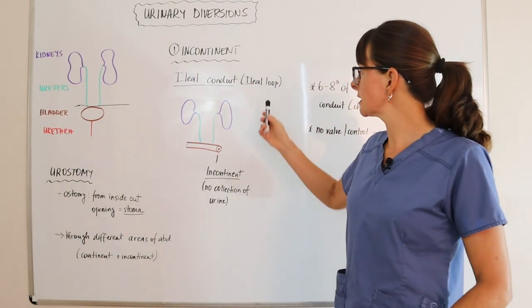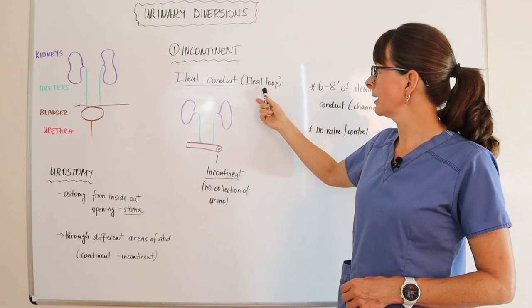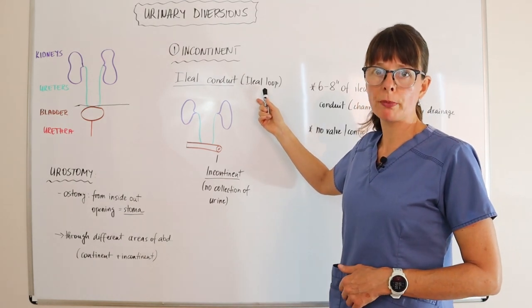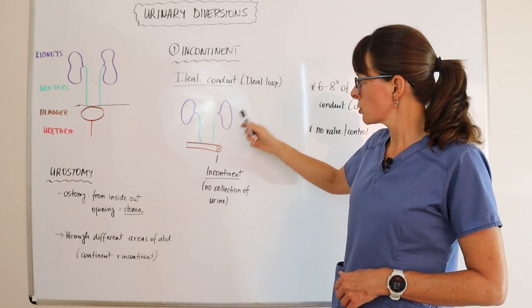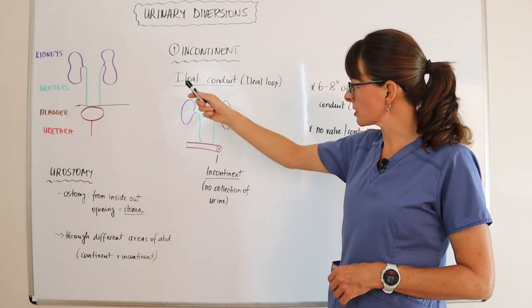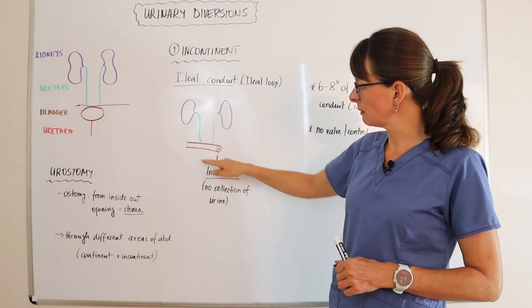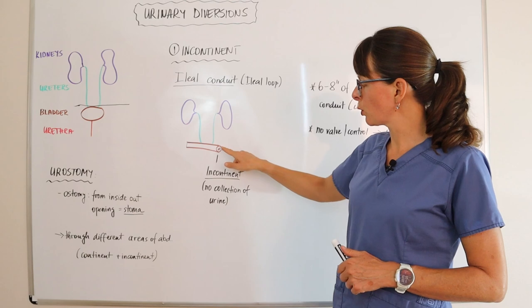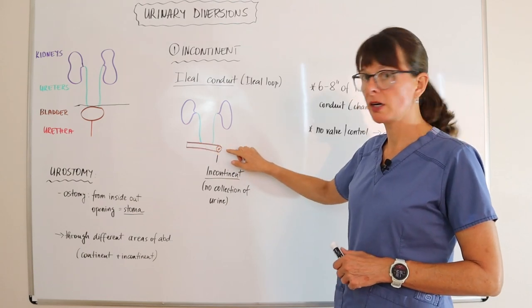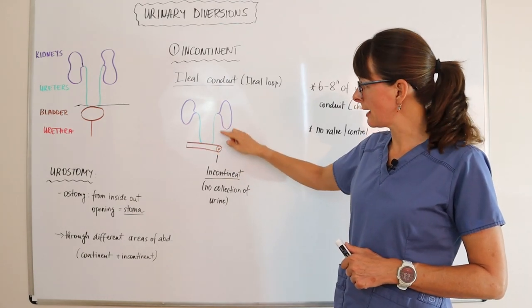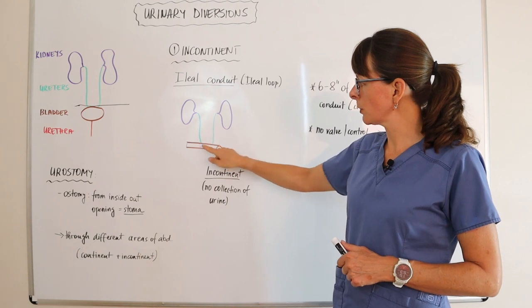An ileal conduit, also known as an ileal loop, is the most common urinary diversion. So we have the kidneys and the ureter just like over there, but then instead of the bladder, we have a portion of the intestine here that has been used now to drain the urine from the ureters into this channel.